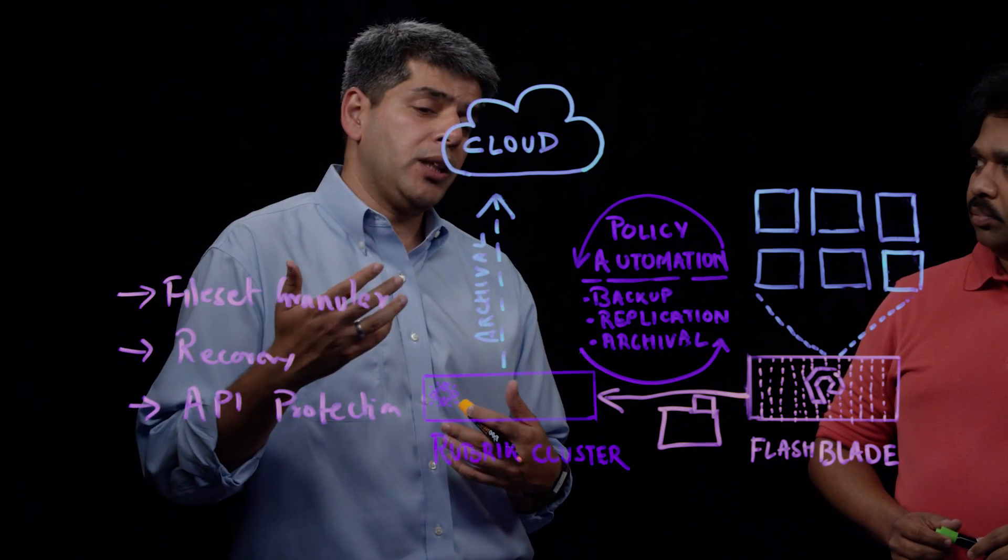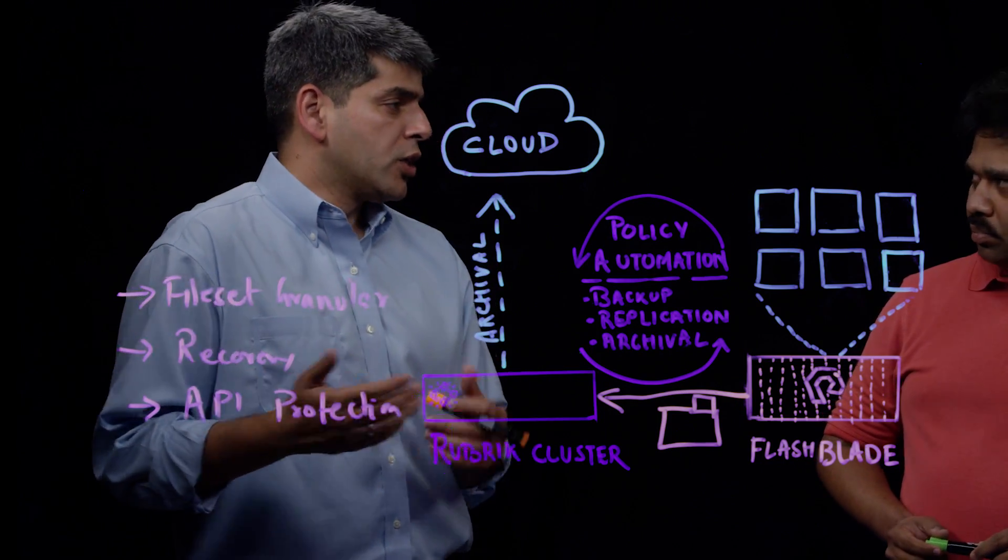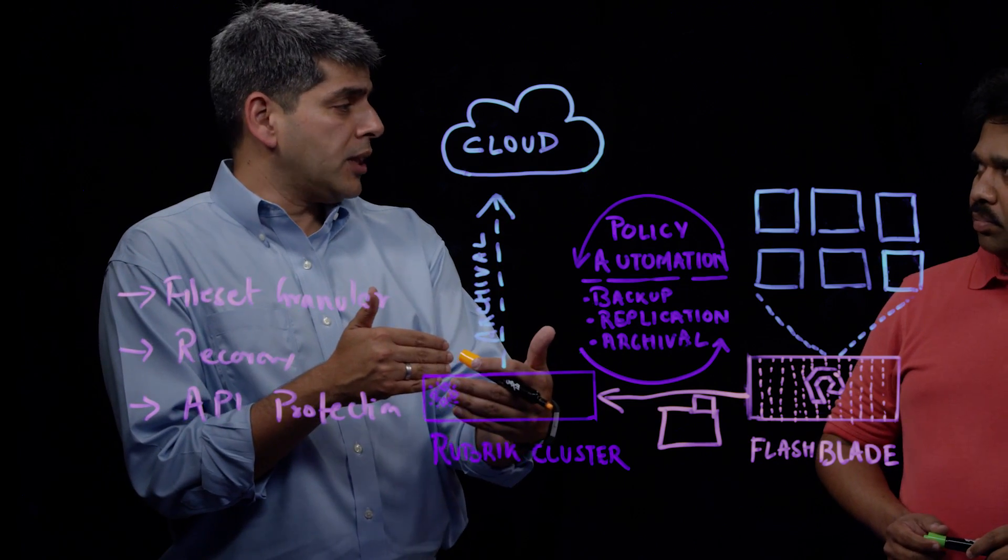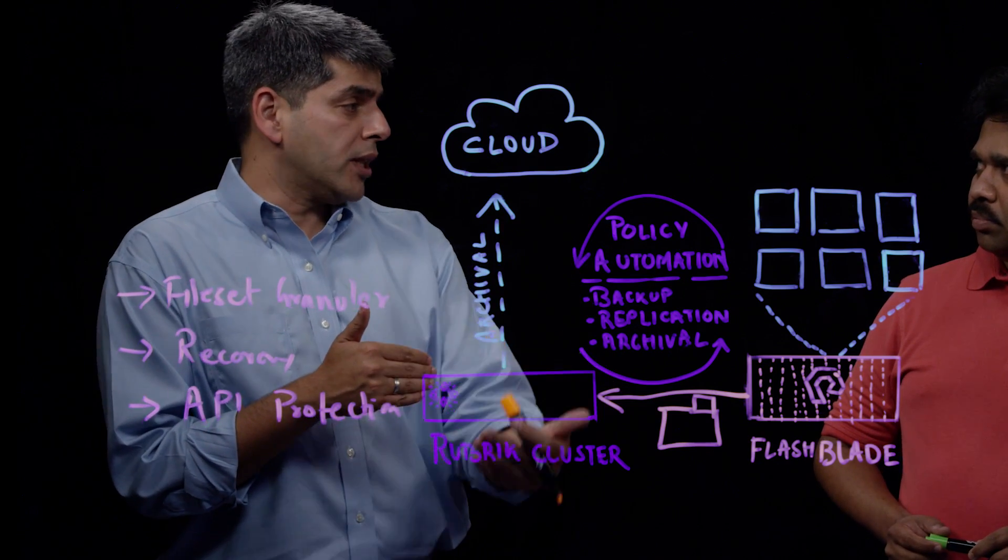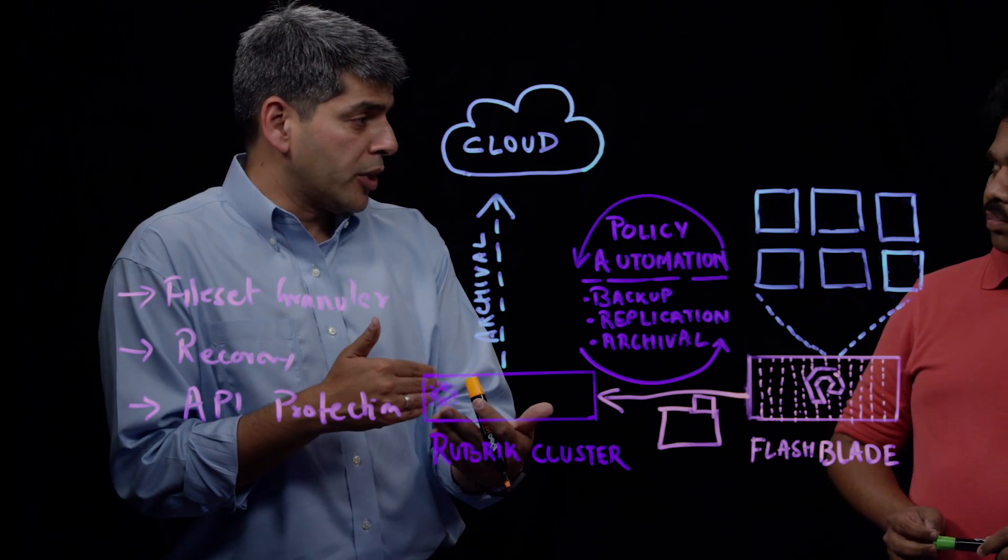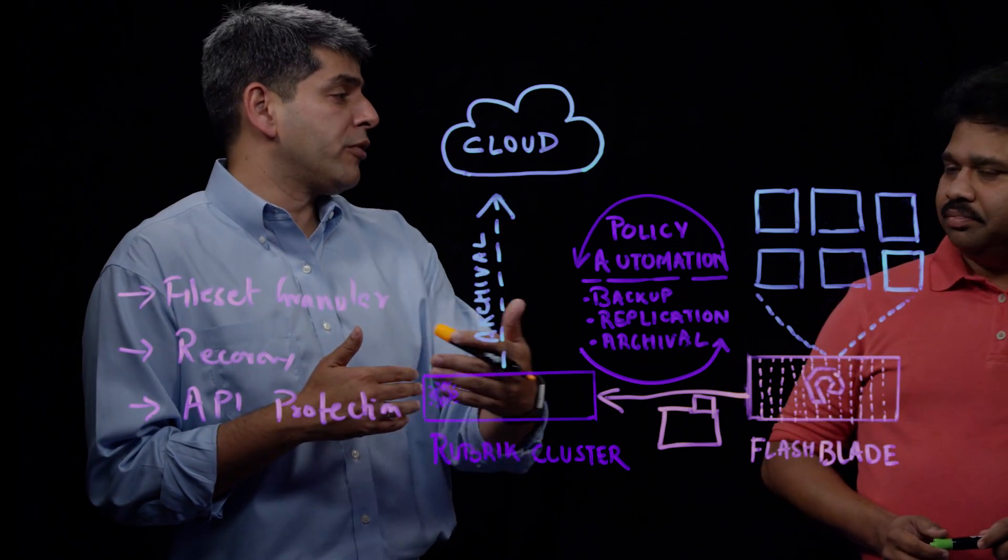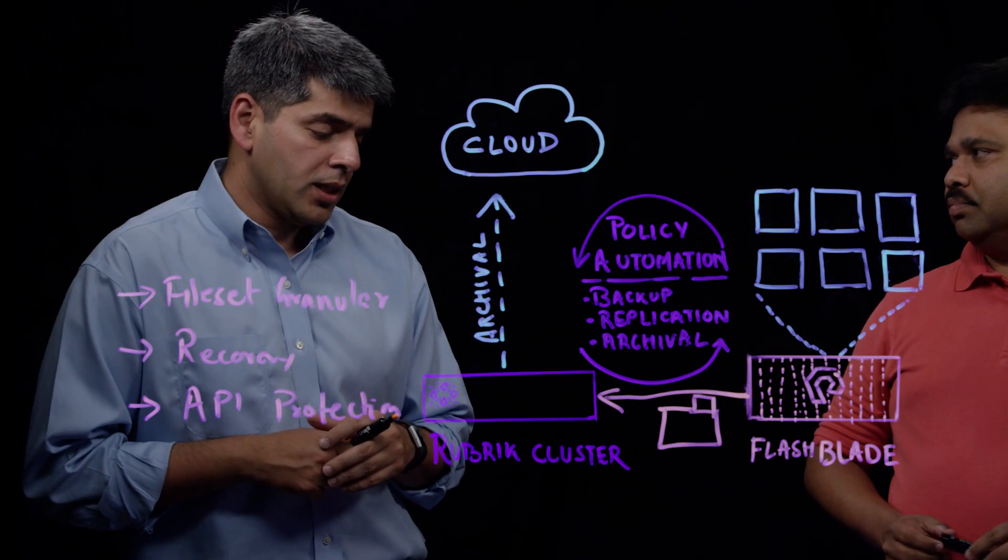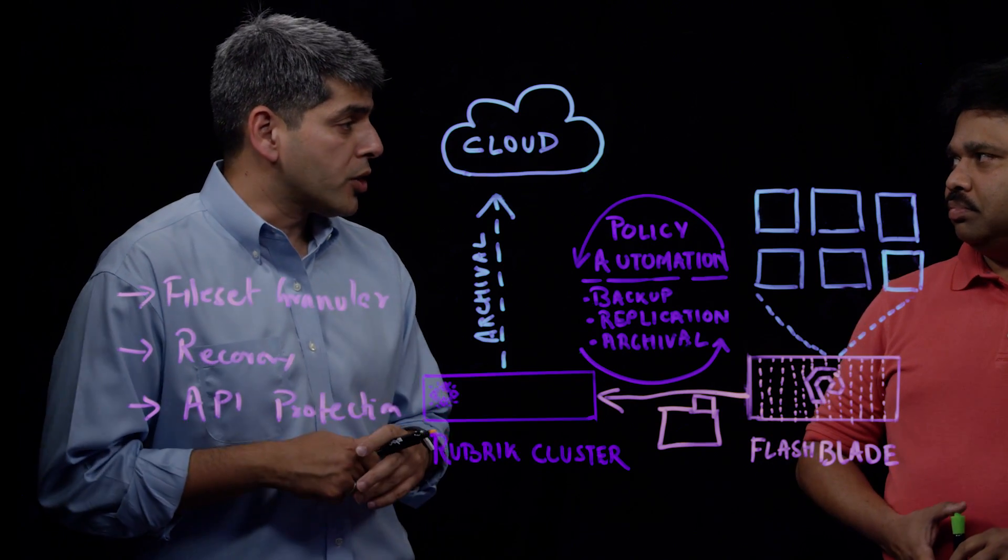And then secondly, it's always true incremental. So after the first full backup is done, any new backups are always incremental, which reduces the overall total capacity you need on the Rubric cluster as well as improves the performance of the cluster or the backup of your NAS shares.